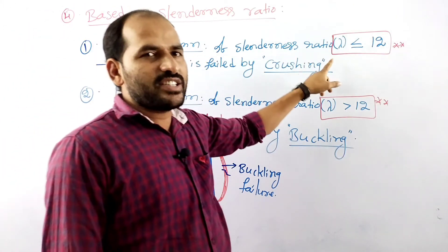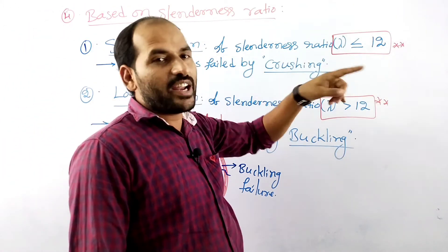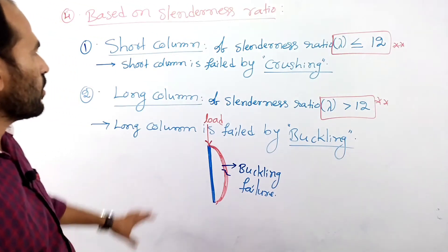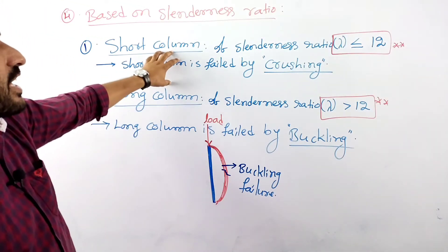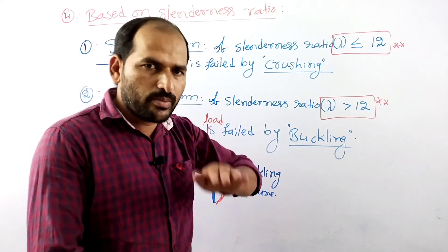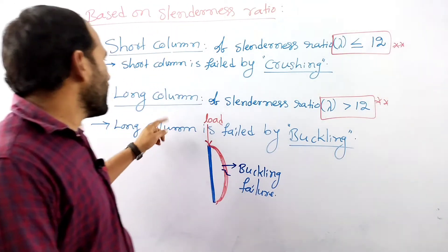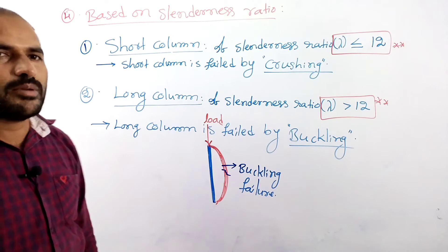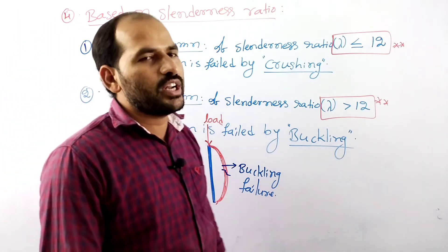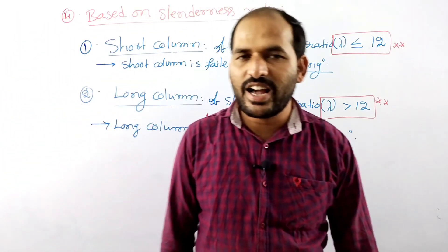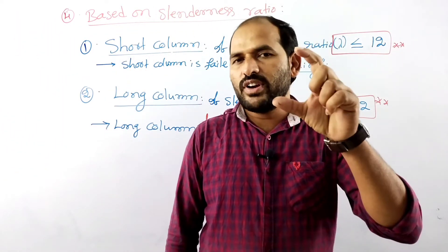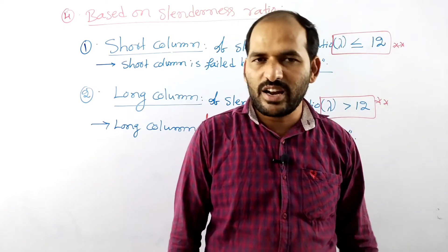Short column: slenderness ratio less than or equal to 12; it is failed by crushing action. Long column: slenderness ratio more than 12; it is failed by buckling action.